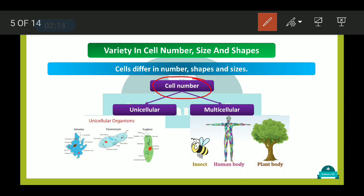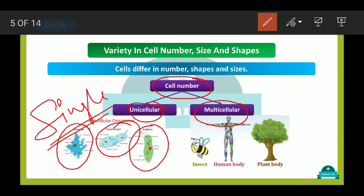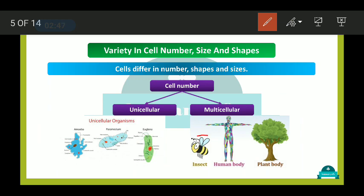Depending upon the number of cells, organisms can be categorized as unicellular and multicellular. Those organisms made up of a single cell are called unicellular — examples are Amoeba, Paramecium, and Euglena. Multicellular organisms are made up of millions and billions of cells, like all insects, human beings, and all plants.